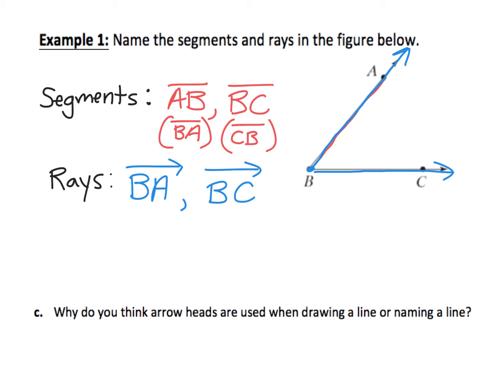Remember that rays have to have the endpoint labeled first. So this is not the same as ray AB. Ray AB doesn't exist because if you look at A and you go toward B, there's no arrowhead at B to show it extends. So make sure with rays that you always name it with the endpoint first.